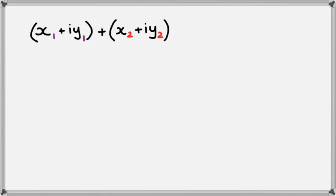So when you want to add two complex numbers in this format, remember that a complex number can be written as x plus iy, where x is the real part and y is the imaginary part.